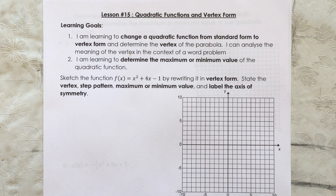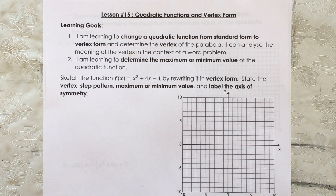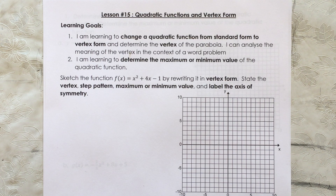Our first question says: sketch the function f(x) = x² + 4x - 1 by rewriting it in vertex form. State the vertex, step pattern, maximum or minimum value, and label the axis of symmetry. If you really understood that grade 10 review, you could pause the video, see if you could answer this question, and then resume and see if you did it right.